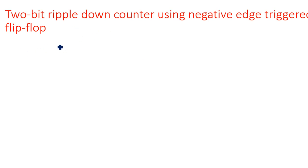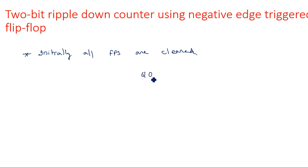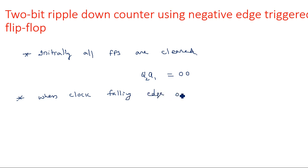Coming to the ripple down counter: ripple down counter counts in reverse order. Initially, all flip-flops are cleared, so Q2 and Q1 will be having 0, 0. Here also negative edge — falling edge — is used. When the clock falling edge occurs, it changes to 1, 1. And then 1, 0. And then 0, 1. And then 0, 0. Again it goes to 1, 1. So it counts 4 clock pulses, but in reverse order.